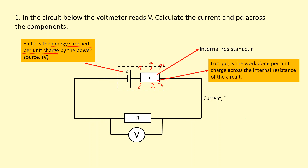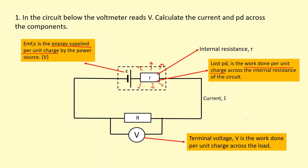The lost PD is the work done per unit charge across the internal resistance. The remainder of the energy is going to get used by the rest of the circuit.